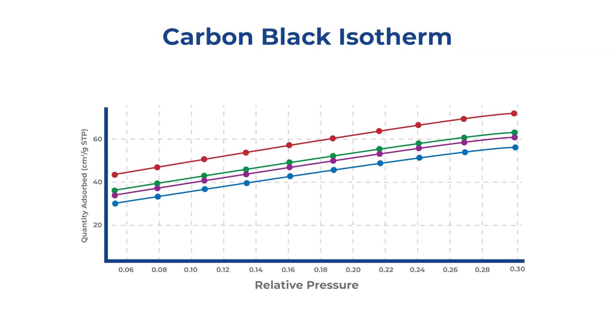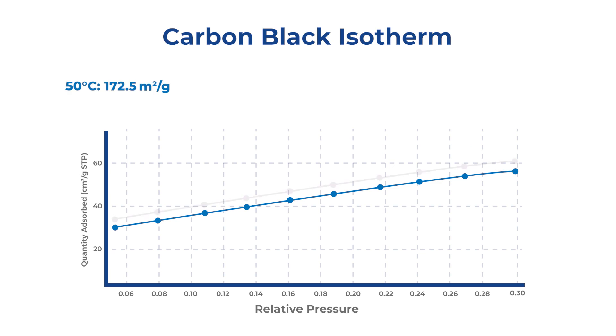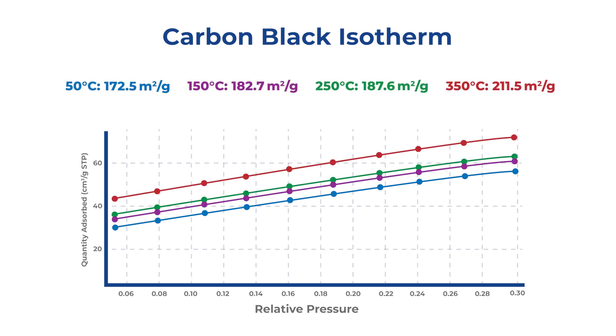Here is an example of a carbon black sample degas under vacuum at different temperatures: 50, 150, 250, and 350 degrees Celsius for 30 minutes. As shown here, the higher temperature degas resulted in more quantity absorbed as well as the BET surface area.